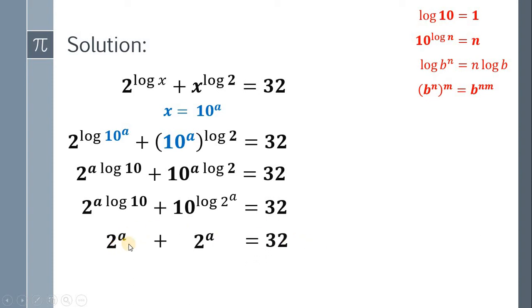We have 2 raised to a plus 2 raised to a equals 32. Now, simplify. 2 raised to a plus 2 raised to a will give us 2 multiplied by 2 raised to a equals 32. Divide both sides by 2. We have 2 raised to a equals 16.